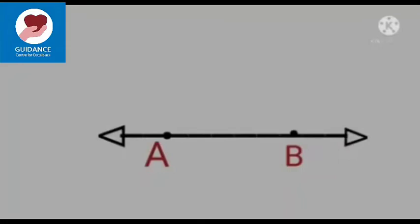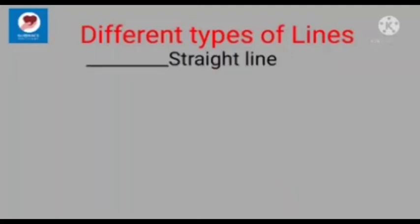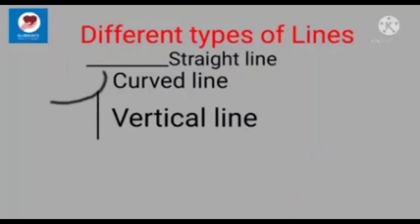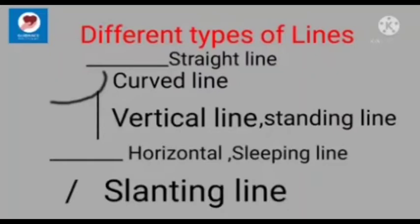A line can be made in any direction. It can be a curved line, a vertical or standing line, a horizontal or sleeping line, or a slanting line.